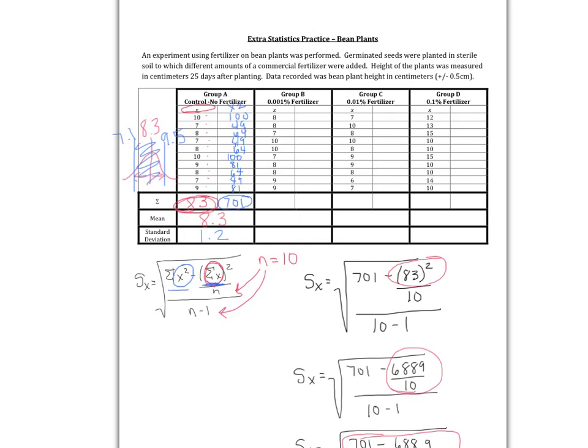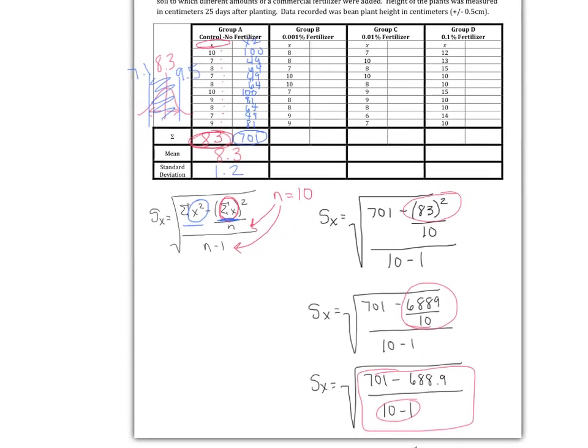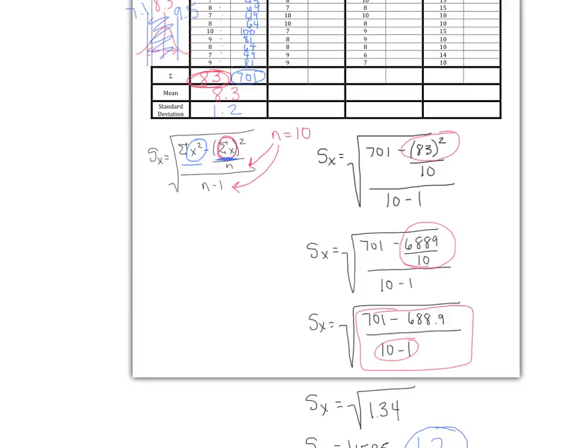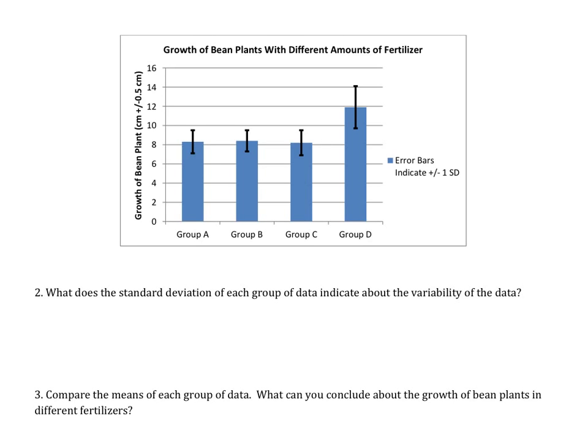See if you can do that with the rest of this data. You should be able to do it with group B, group C, group D, same process. I would get in the habit of writing out all of your different steps. These are going to be the steps that you want to include in your data analysis section where you prove to me, to IB, to any readers reading your lab that you understand the math behind standard deviation.